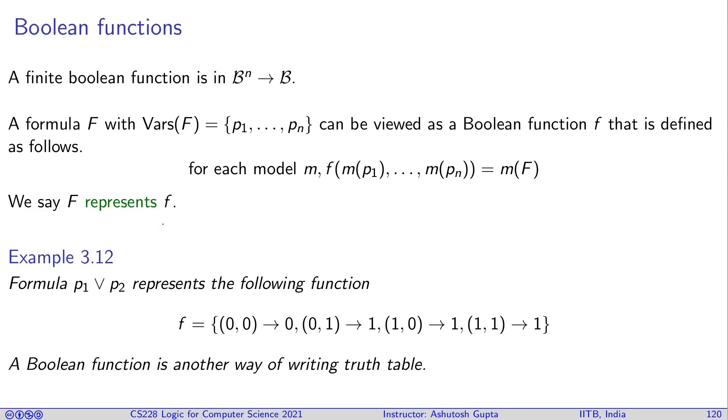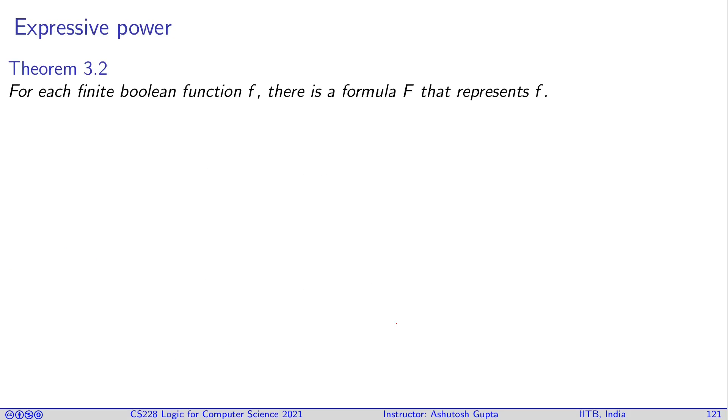For example, you have a formula p1 or p2. It has two variables, so you can say it represents this function f. If you give it (0,0) it produces 0, (0,1) produces 1, and so on. This is basically a truth table. Boolean functions, in other words, are truth tables.